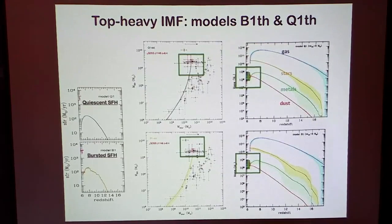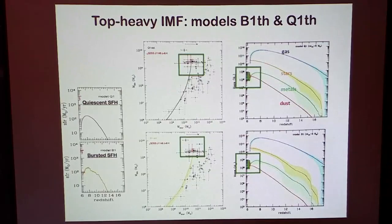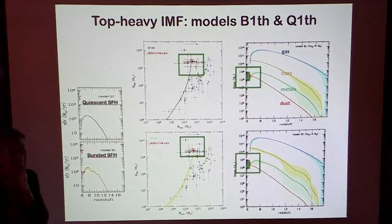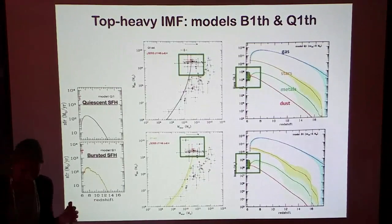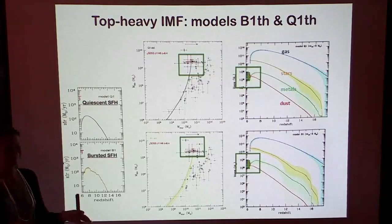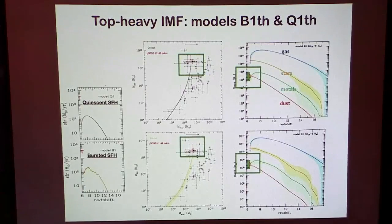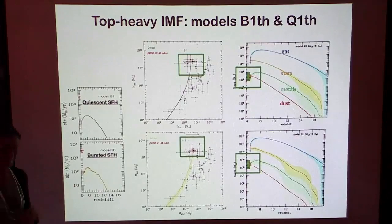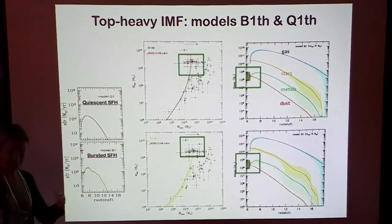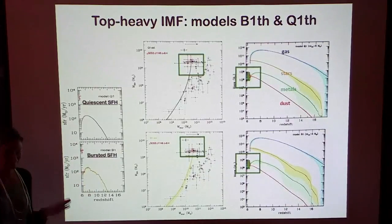The latest idea is a combination — early on a top-heavy IMF and later on a bottom-heavy IMF — which is essentially the solution being explored. I can structure my thinking on the possible evolution of the characteristic stellar mass as a function of metallicity and dust-to-gas ratio, and I'm clearly open to that.